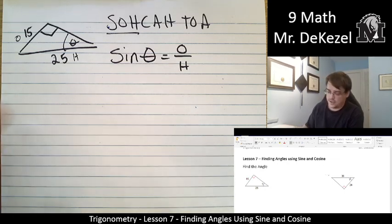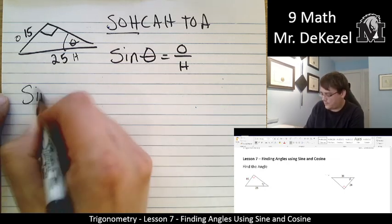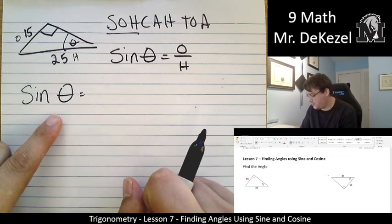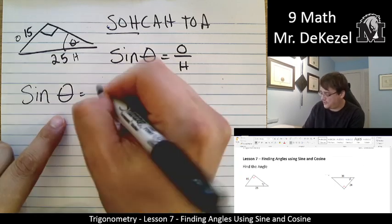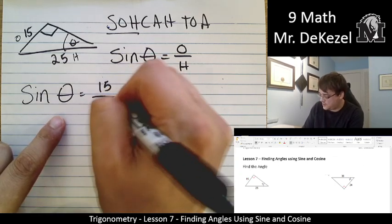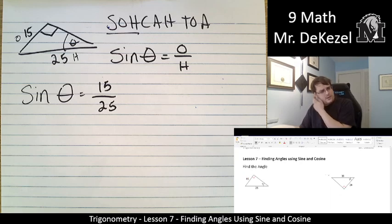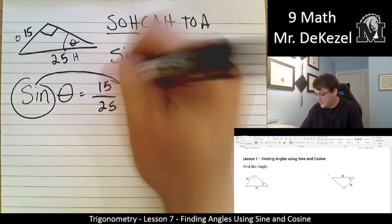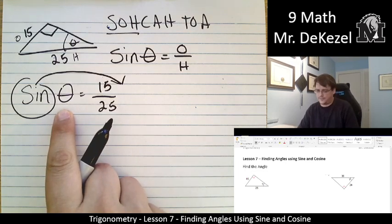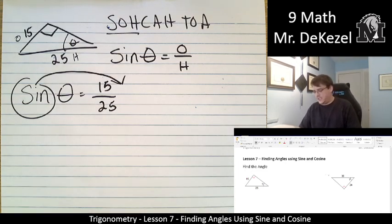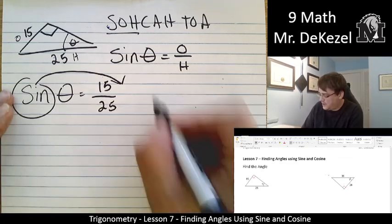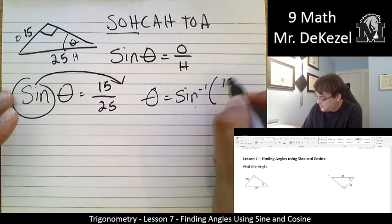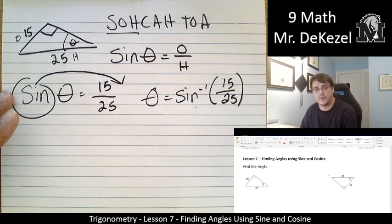Let's go ahead and plug in the values that we know. Now, we're looking for the angle, so we don't know that, is equal to opposite is 15, hypotenuse is 25. Now we know that when we have sine on one side, we're going to move it over, so we can isolate the theta, isolate the angle. But now, we need to do the inverse of it. So, that would be theta is equal to sine inverse, 15 over 25.